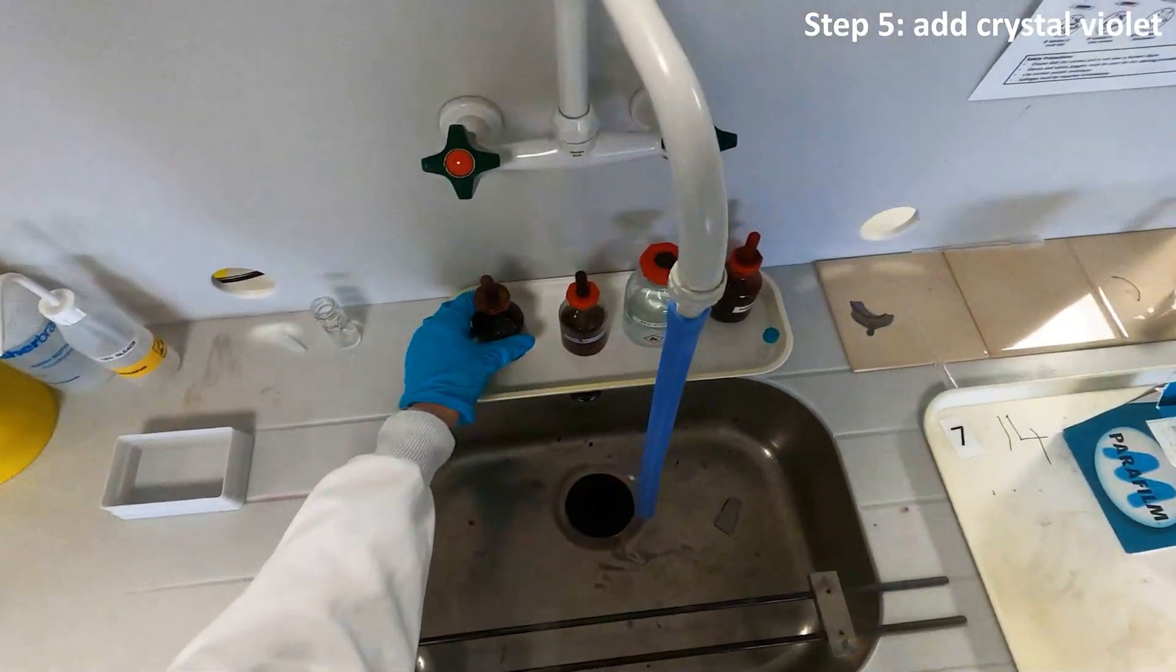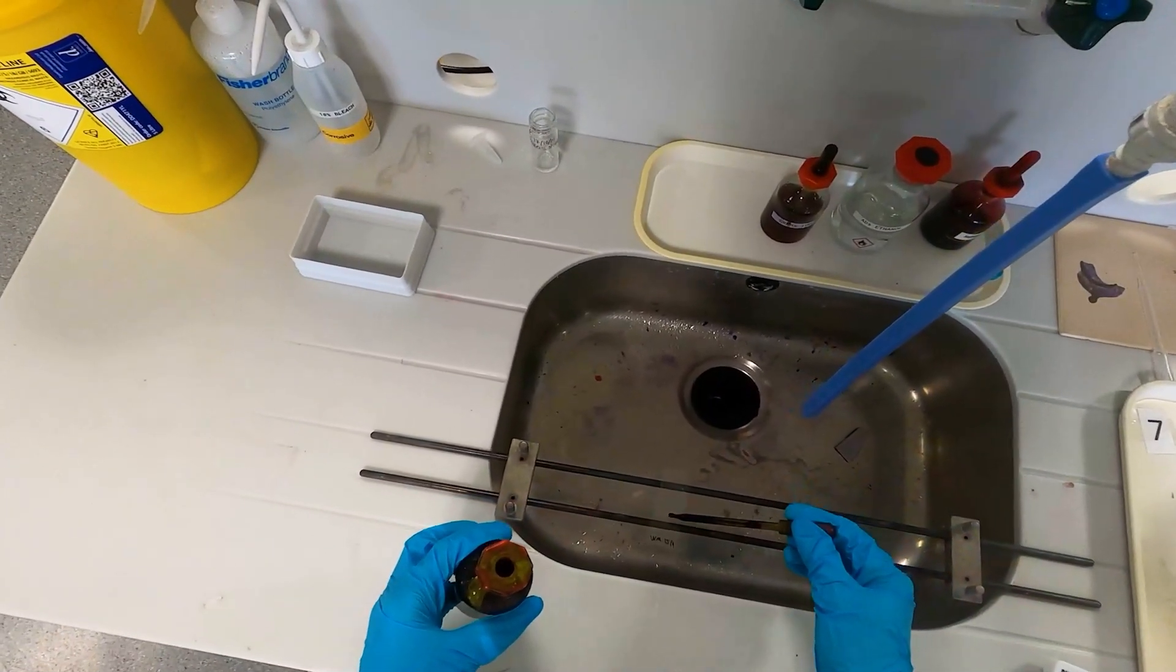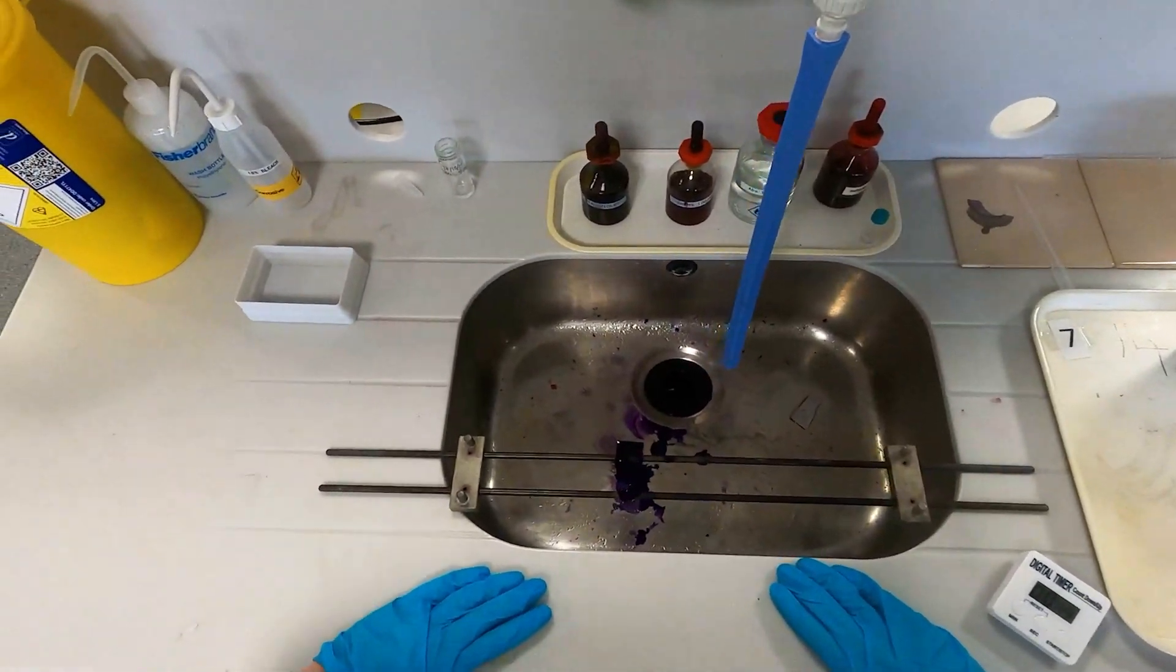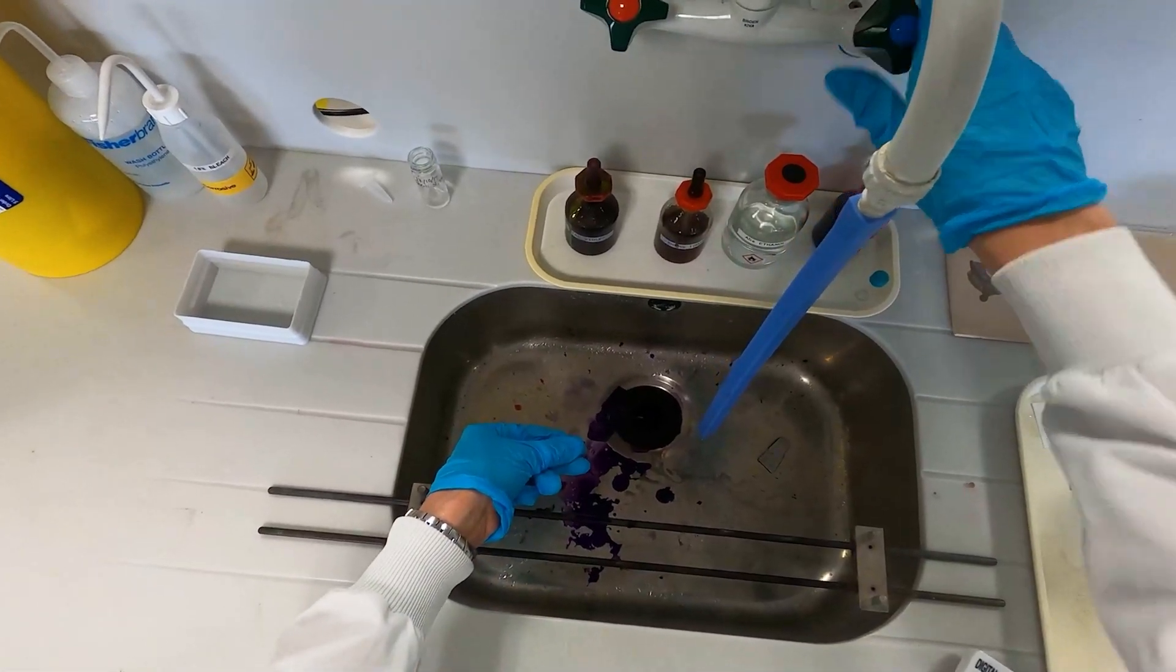To start your Gram stain, take a few drops of crystal violet and add it to your slide. The crystal violet binds to the peptidoglycan in the bacterial cell wall. Wait 30 seconds and then rinse under running water to get rid of excess crystal violet.